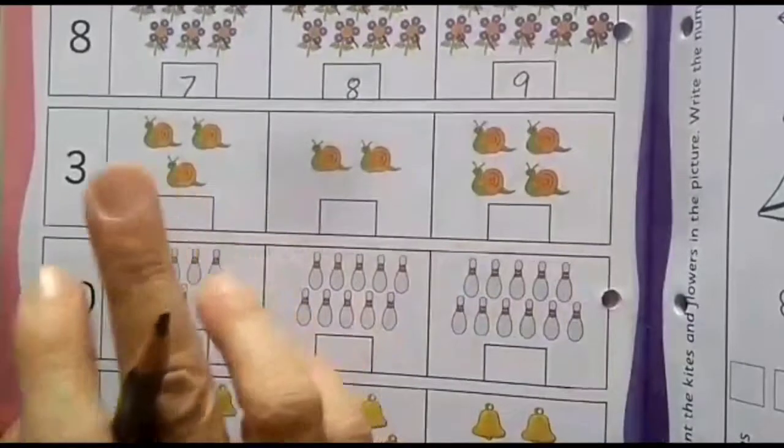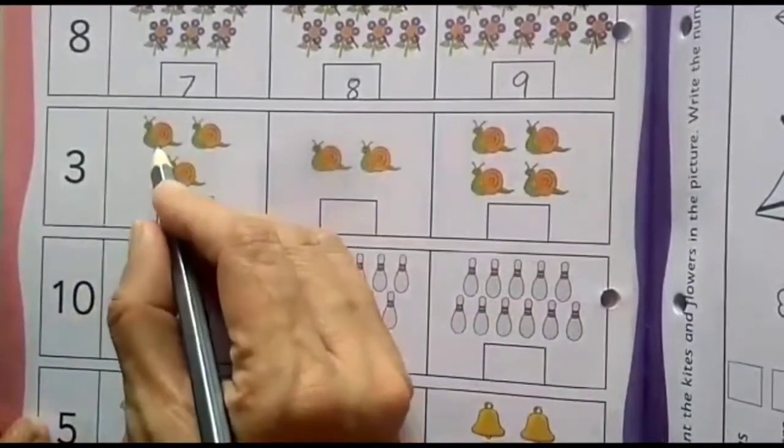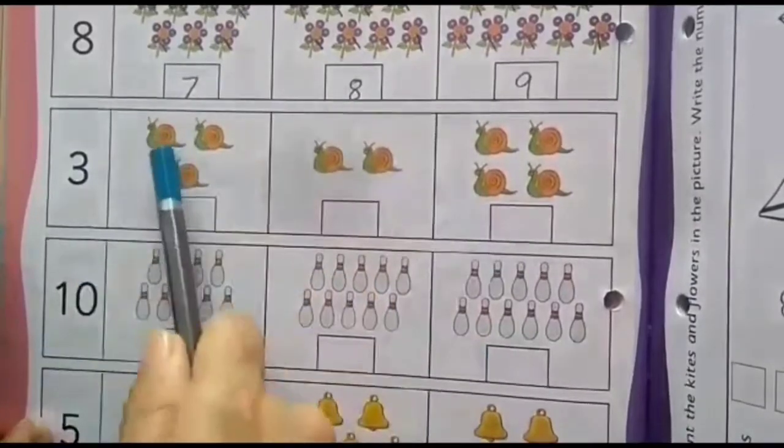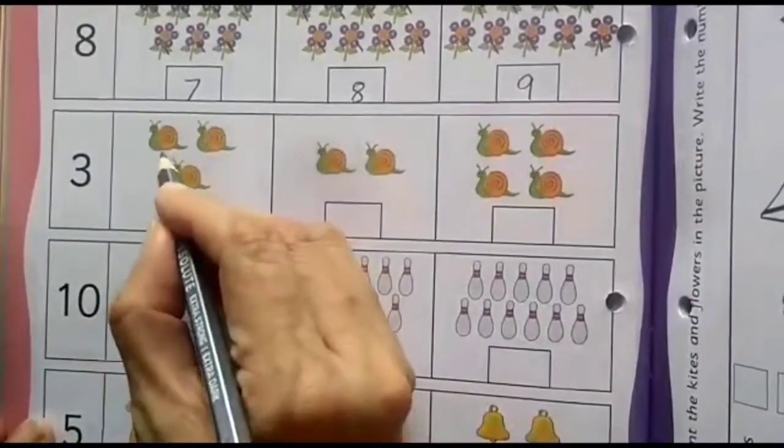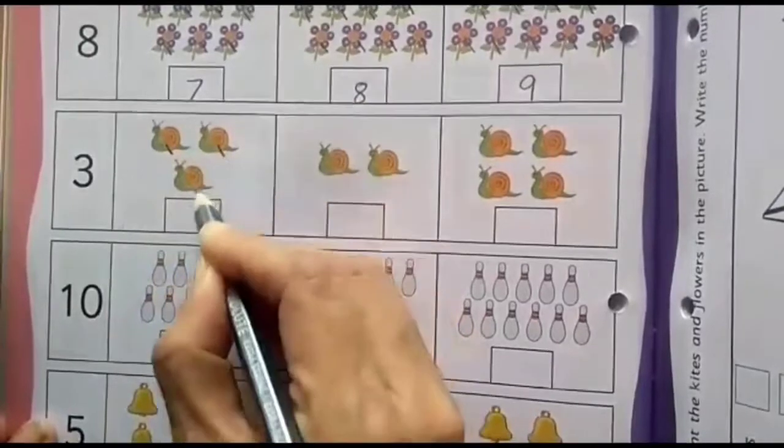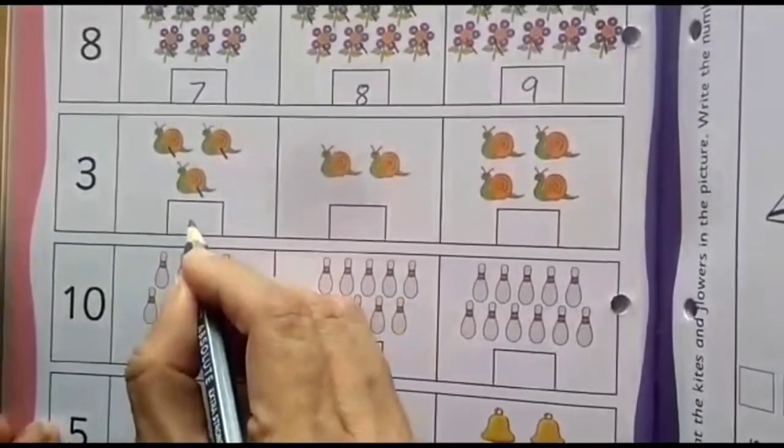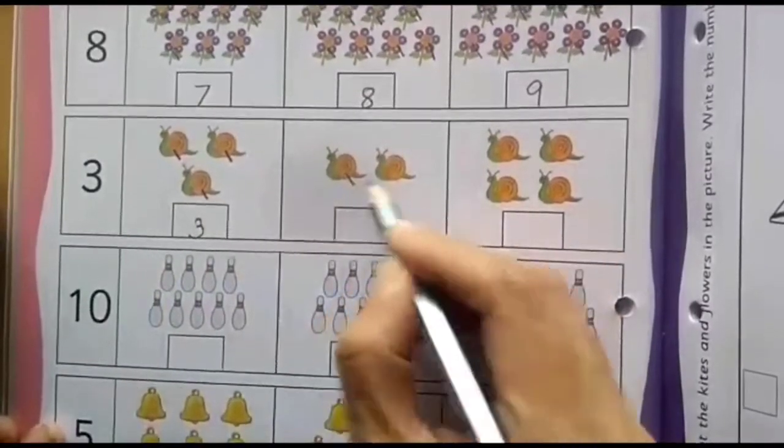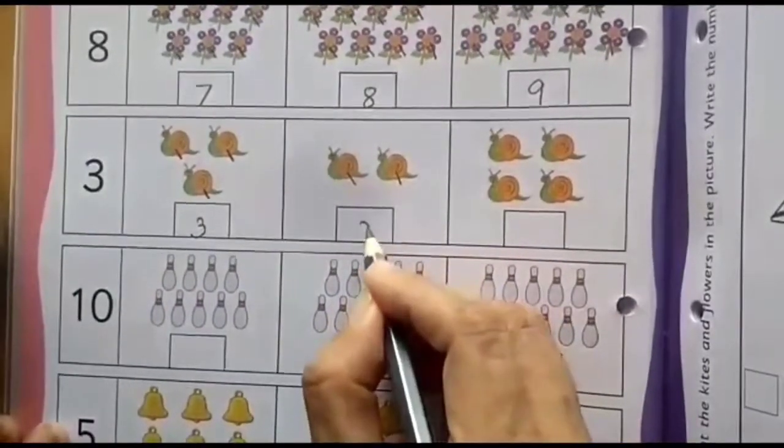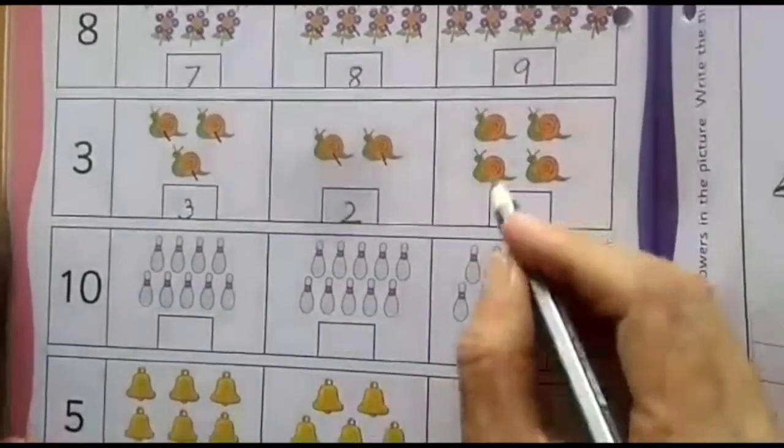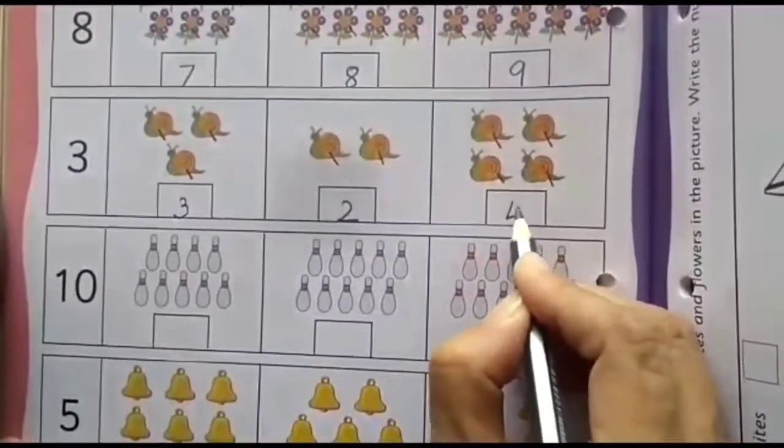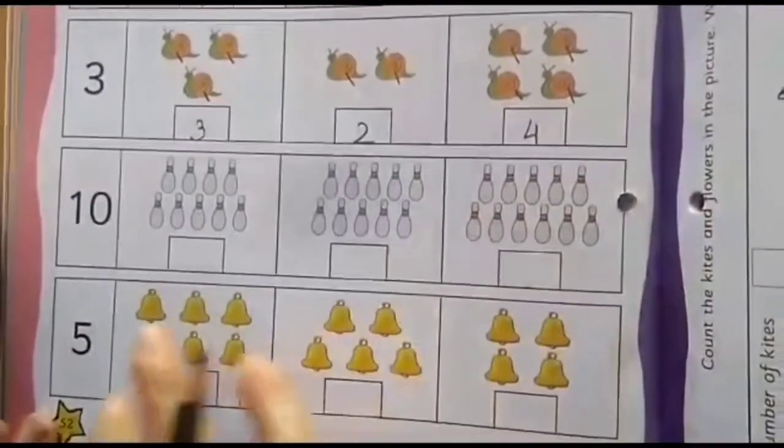Let us come here. Whenever you are counting, you have to strike off that with the pencil. Don't count like this. Then later on you will face problem. 1, 2, 3. So, here which number will come here? Number 3. Here, 1, 2. So, here number 2 will come. Here, 1, 2, 3, 4. So, here number 4 will come. Likewise, let us go down.